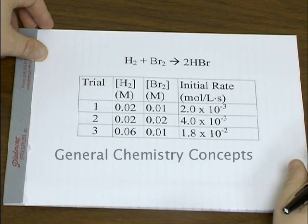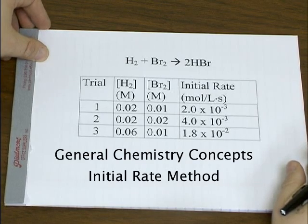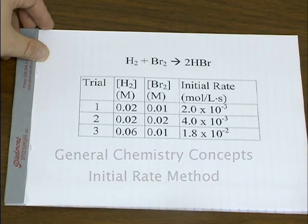A common way to experimentally determine the rate law of a reaction is often referred to as the initial rate method. And a typical setup would look something like this.